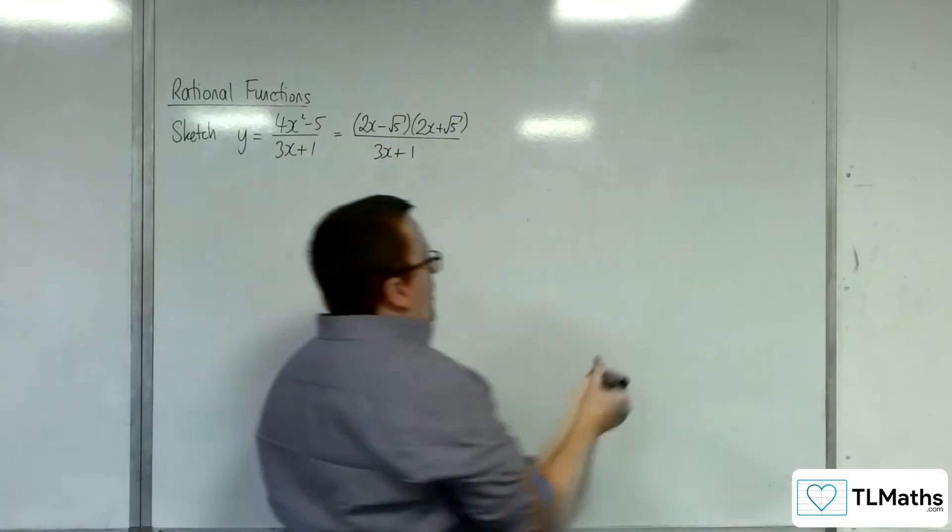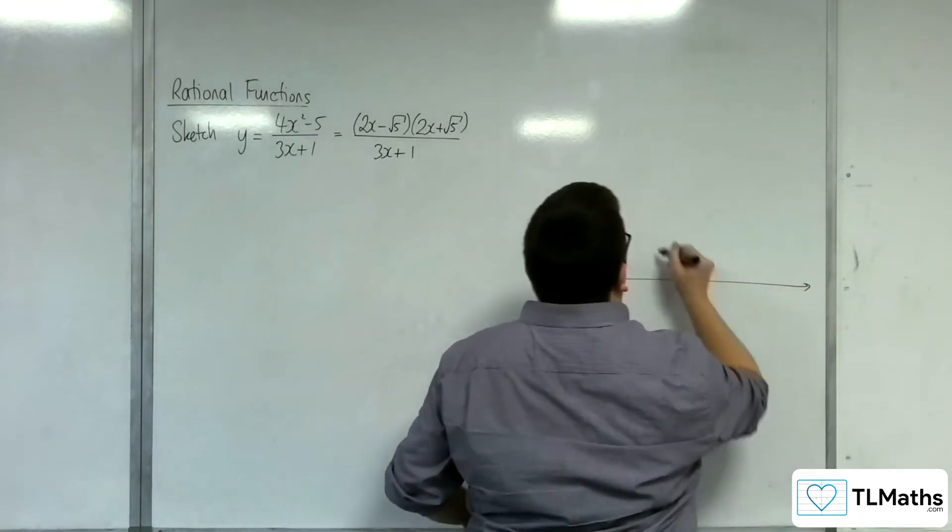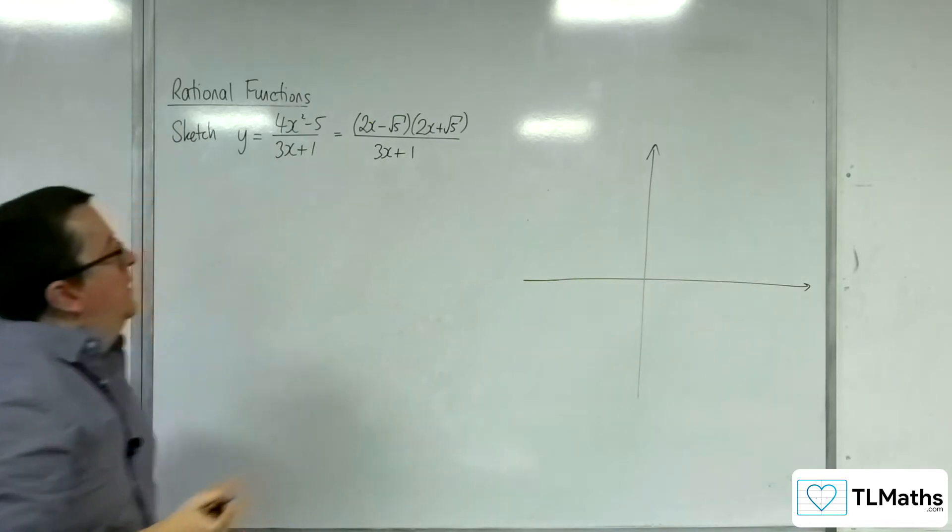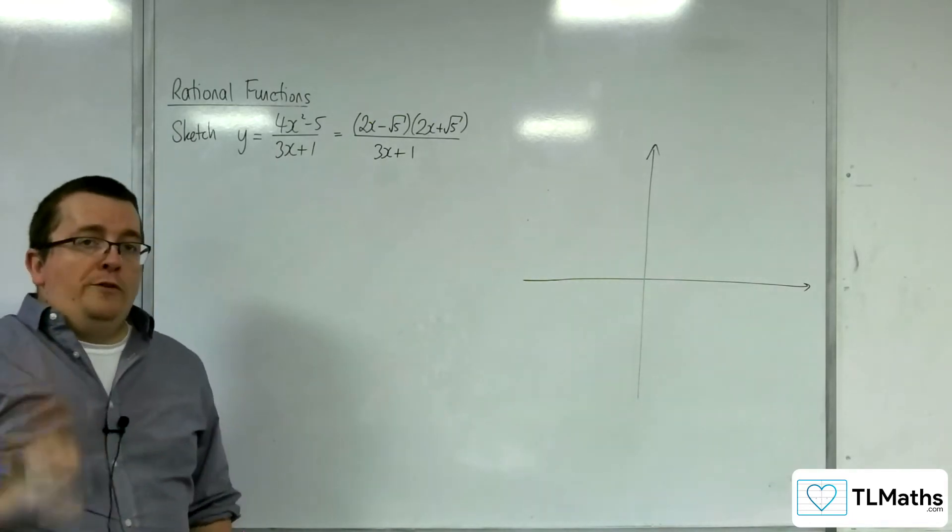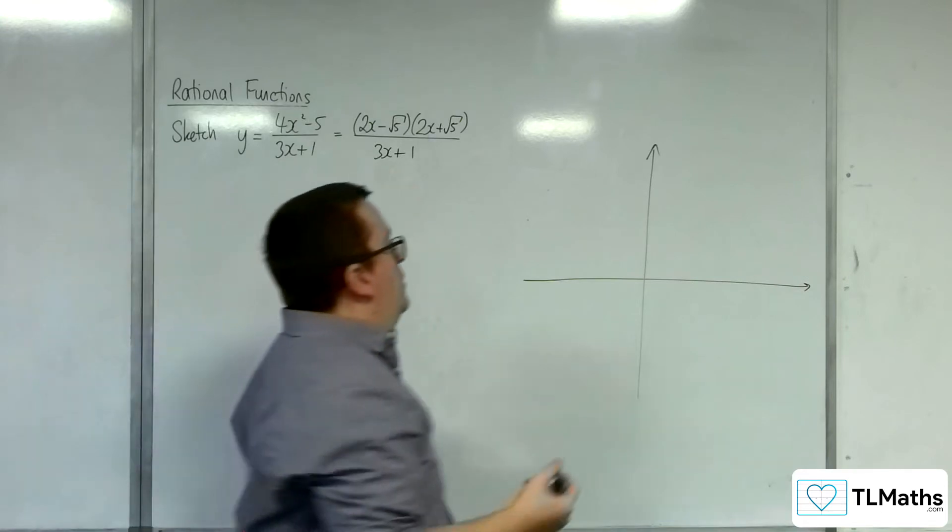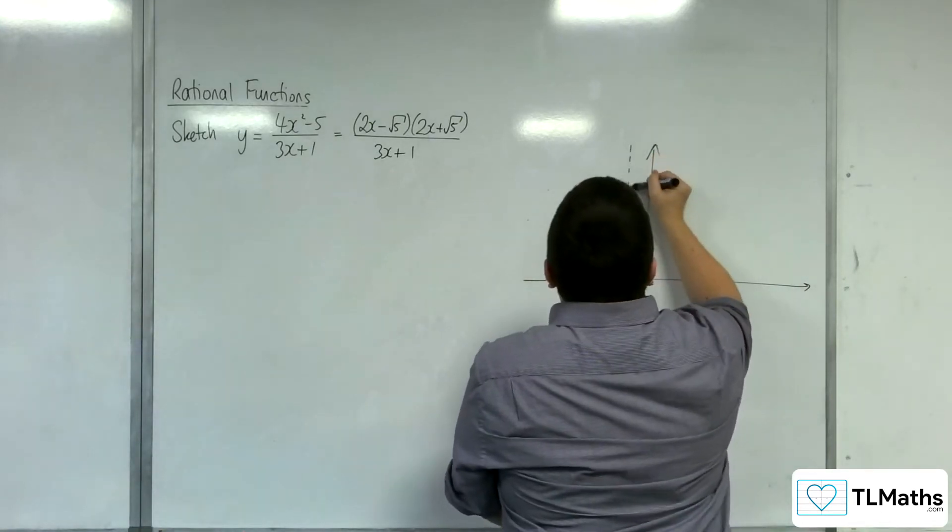Right, let's draw a graph. First of all, where is the vertical asymptote? That's at x equals minus a third when the denominator is zero. So x equals minus a third.